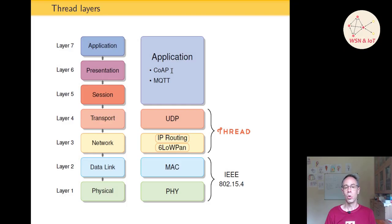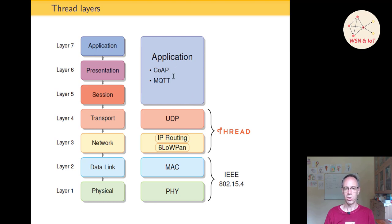Welcome to the sixth video of the Thread Network series. In this video we will make a practical example with the application protocol CoAP and our nRF52840 developer kits. In the last video we learned the theory about CoAP. CoAP is quite similar to HTTP but it's specially designed for embedded systems, perfectly fitting for IoT and WSN devices. It uses UDP instead of TCP as the transport layer, fitting perfectly to be used with Thread at the application layer.